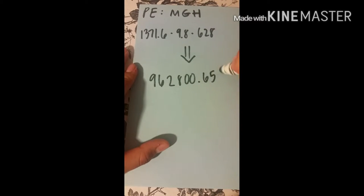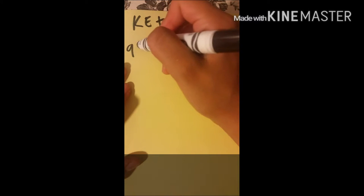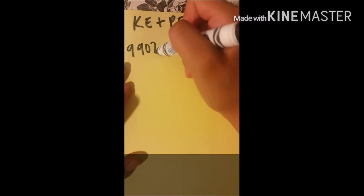And that will be our potential energy. Remember that to find our total mechanical energy, we needed to add KE plus PE. And that will give us our total mechanical energy. So, we are going to add the previous numbers.